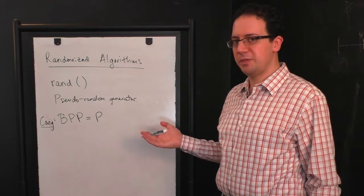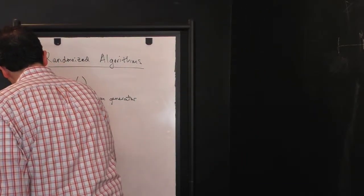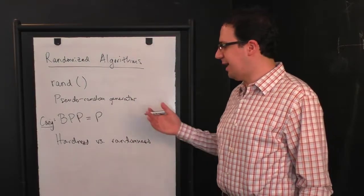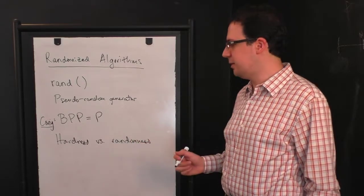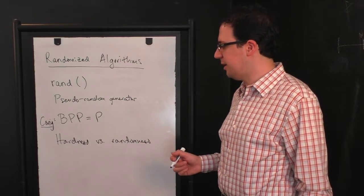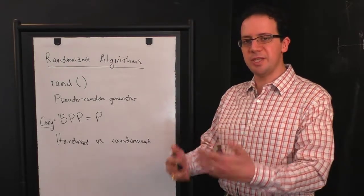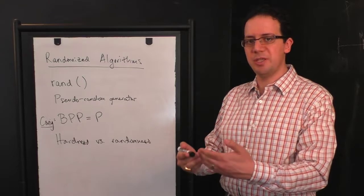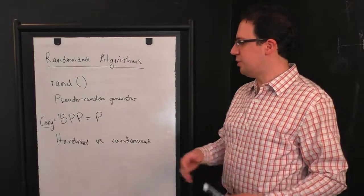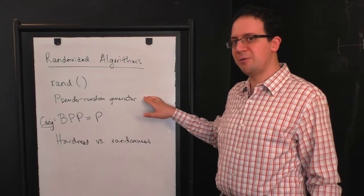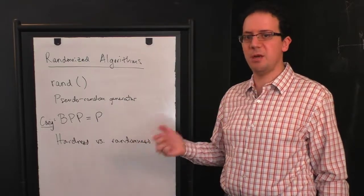Part of the reason people believe this conjecture is because of what's called the hardness versus randomness principle. And I say principle because there's a class of results that come under this, but they are real results. There are real theorems that follow along this general line. And essentially what the hardness versus randomness principle says is if there exist functions that are actually sufficiently hard to compute, I can use those to essentially create good pseudorandom generators.